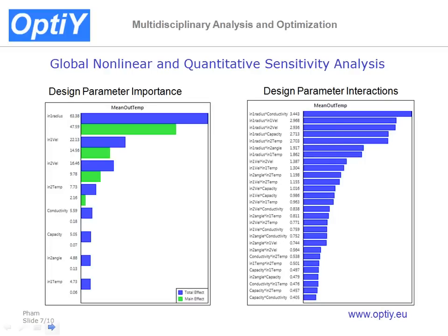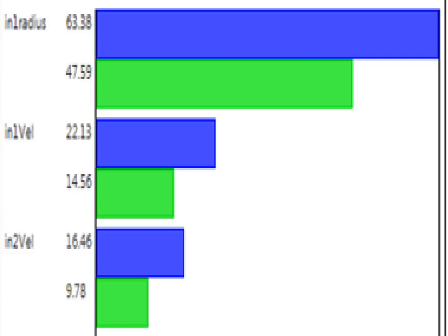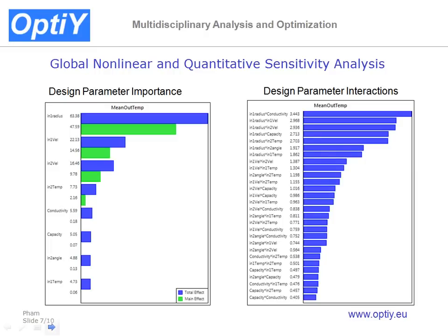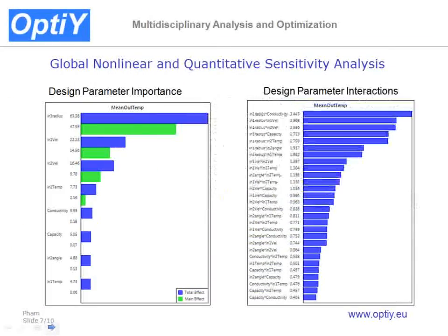Within OptiWire, we can do a nonlinear quantitative sensitivity analysis to get the important design parameters. There are three: the radius of inlet pipe one and the velocity of the water at inlet pipe one and inlet pipe two. They account for about 16 to 60% of all importance. The interactions between design parameters are also available — for example, the interaction between the radius of inlet pipe one and the conductivity of the water accounts for about 3.4%.